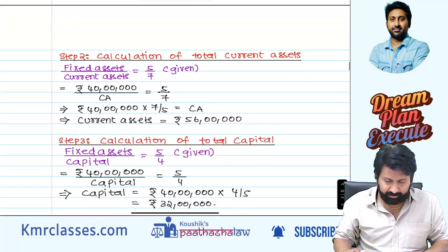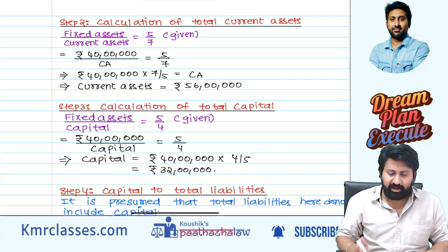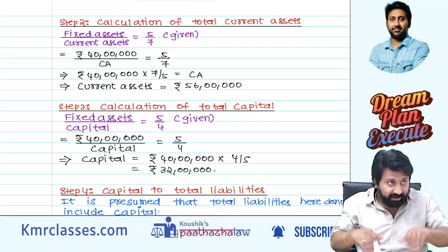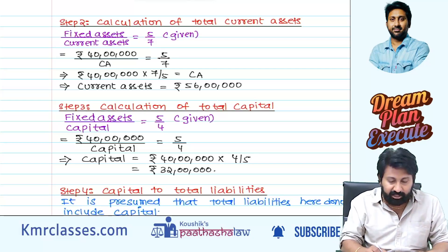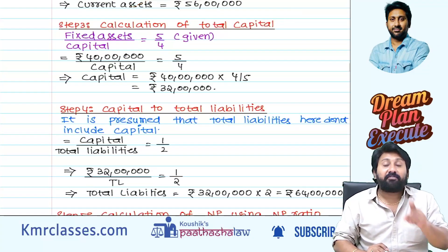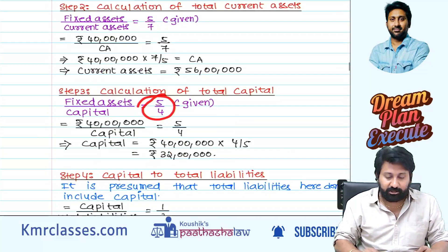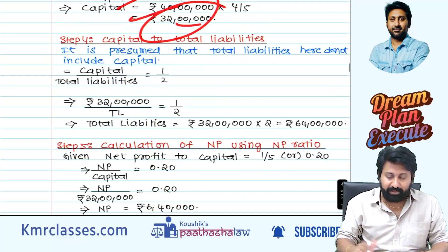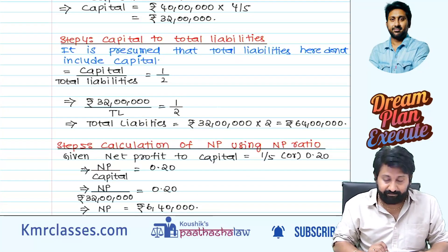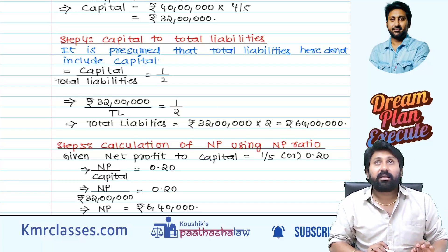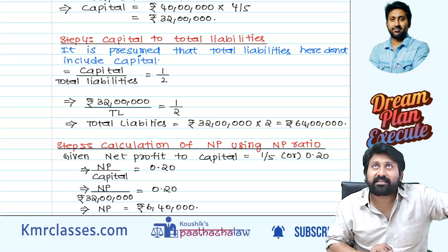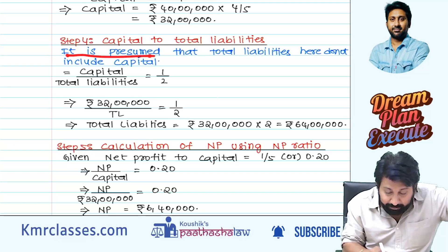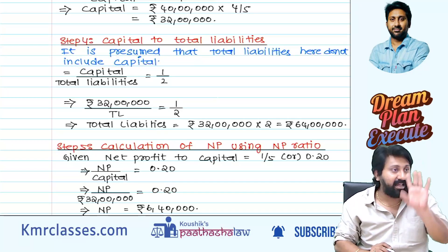For fixed assets to current assets ratio given as 5:7 — use pre-calculated current assets total. Fixed assets divided by total capital is given as 5:4 in the question. Capital to total liability is a very important adjustment — capital to total liability = 1:2. It is presumed that total liabilities do not include capital; that assumption has to be taken.